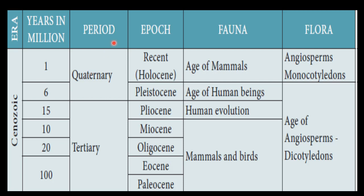The Cenozoic era has two periods: one is the Tertiary period and one is the Quaternary period.